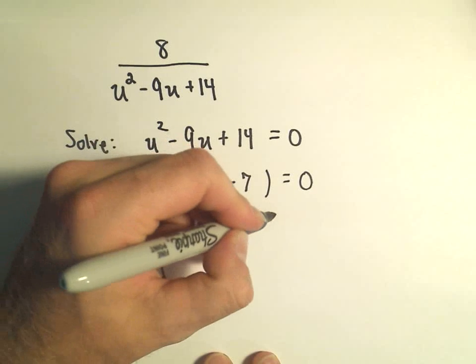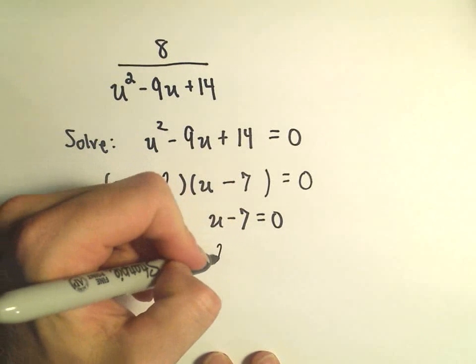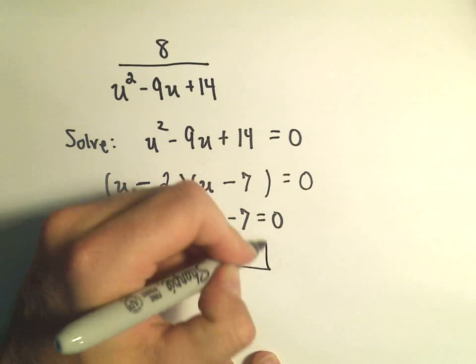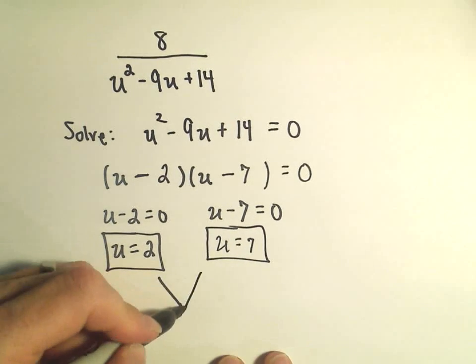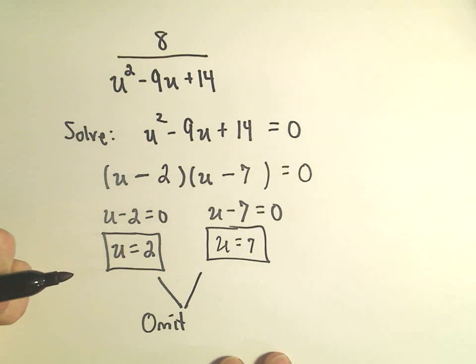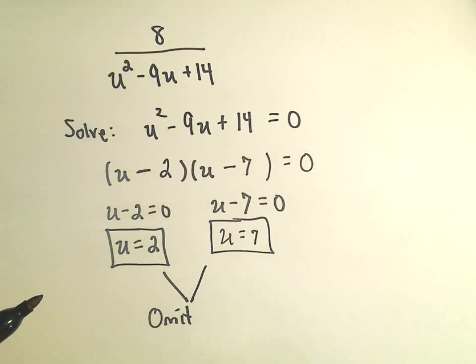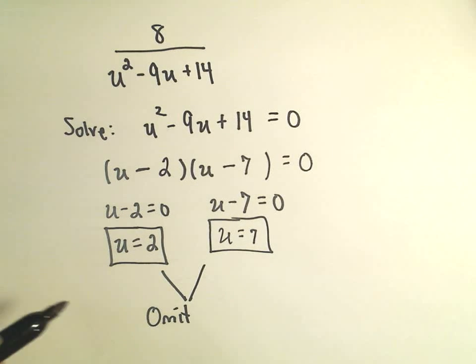Likewise, if we make u minus 7 equal to 0 and add 7 to both sides, we'll get u equals 7. And these are the values that we would have to omit, or again, these are the values that would make the expression undefined.